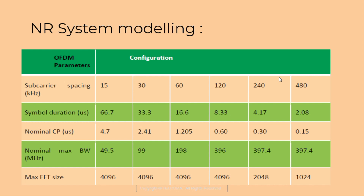Frame structures are required to be modeled, including the OFDM parameters and their configurations. The sub-carrier spacing values are: 15 kHz, 30 kHz, 60 kHz, 120 kHz, 240 kHz, and 480 kHz.